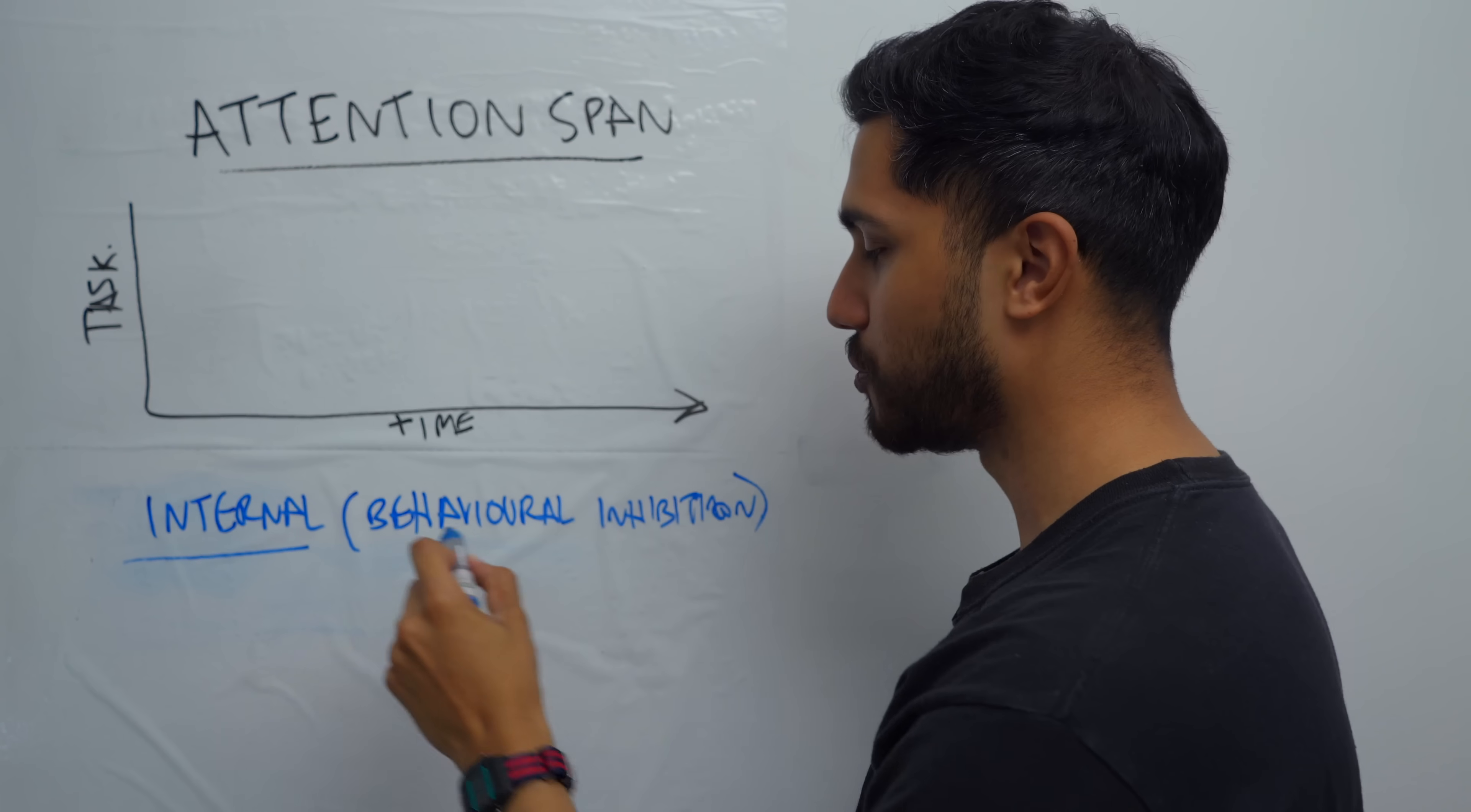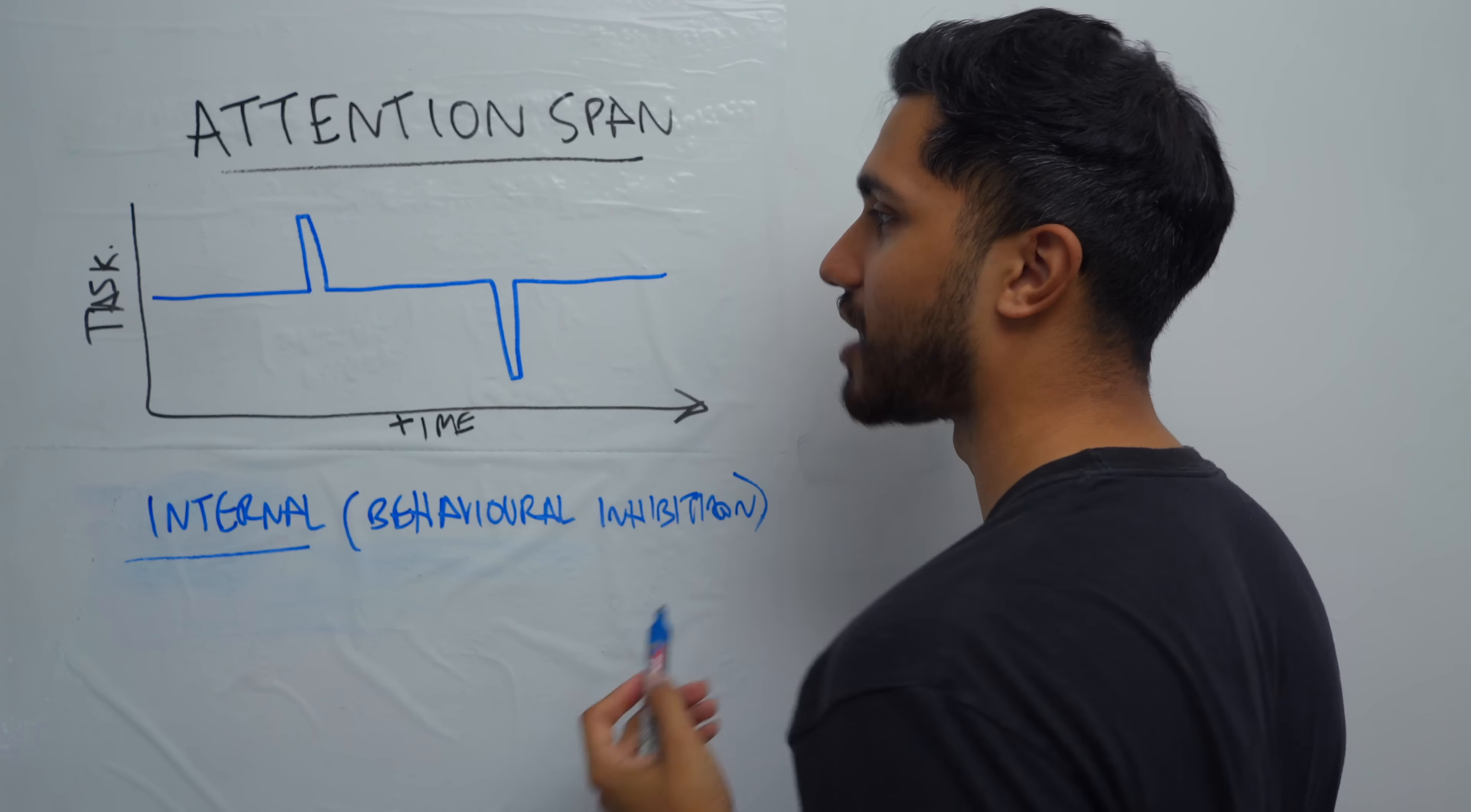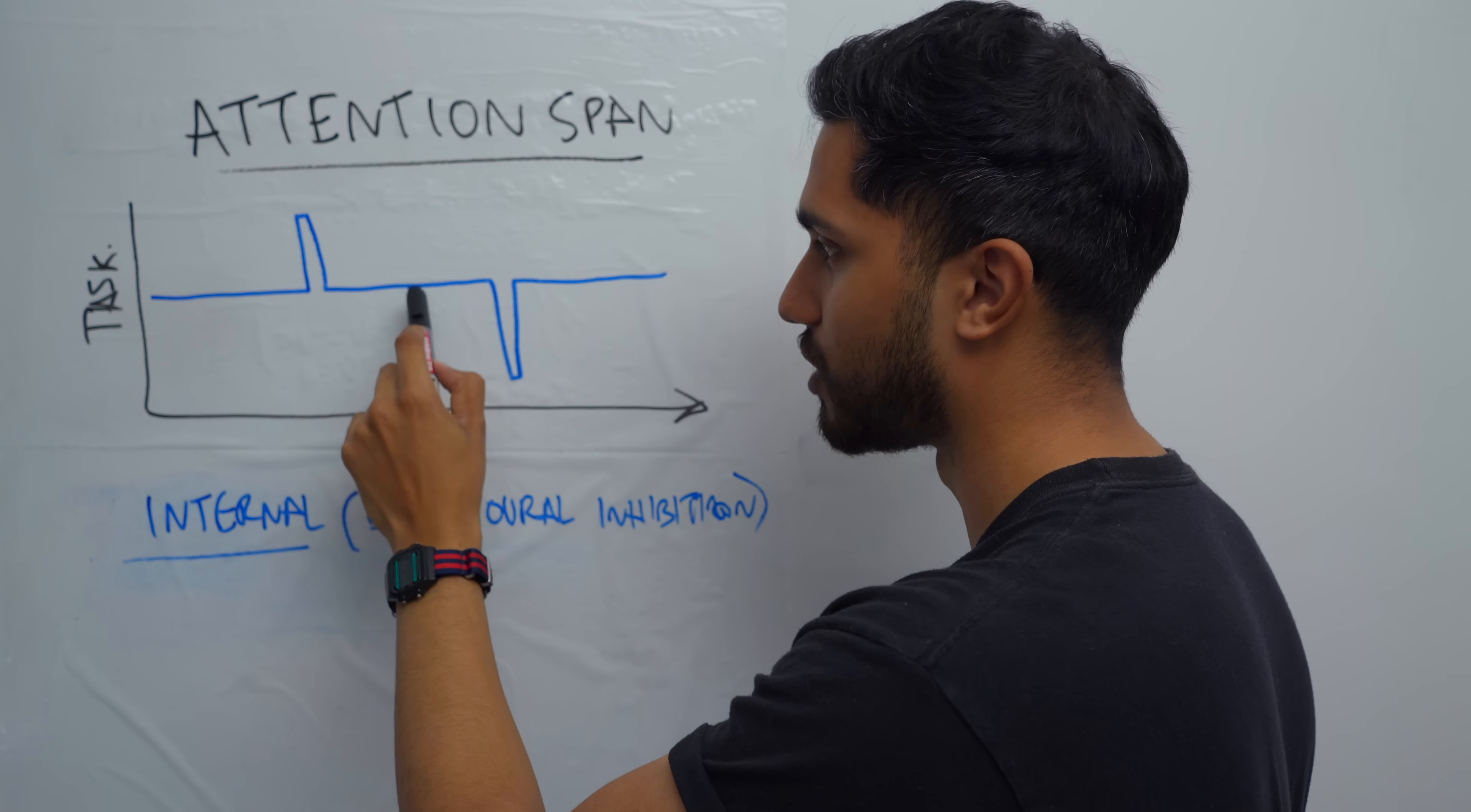So a good attention span with good behavioral inhibition looks like this. You're on task A, you get distracted by task B, but then you come straight back to task A, get distracted by task C for a little tiny bit, then you get back to task A. And then overall, the amount of time that you spent doing the task you wanted to do is most of the whole time that's elapsed. Because you can't stop yourself from getting the intrusive thought. And this is the intrusive thought.